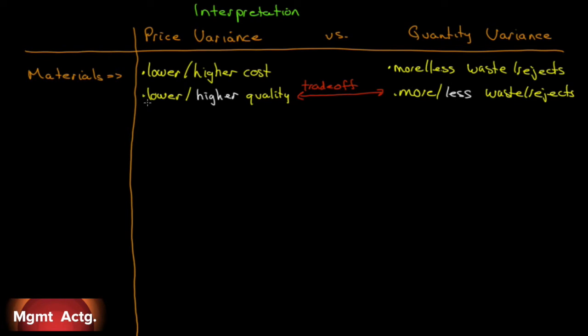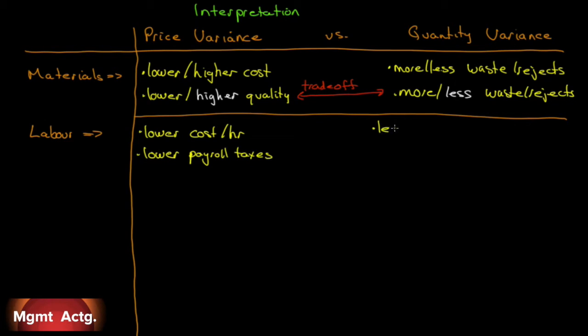Let's look at labor. How we can get positive or favorable variances. We can get a favorable price variance with a lower cost per hour. Instead of hiring very experienced people at $20, let's hire some people at $15. Lower payroll taxes. Sometimes to stimulate the economy and to encourage hiring, the government will give a deal to corporations that for a while your payroll taxes are going to be significantly lower.